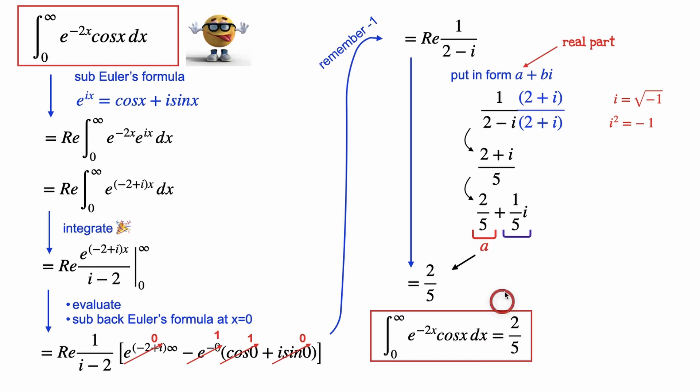What's really cool is this imaginary part, that's the answer if the integral had a sine x into it instead of a cosx, because the sine x is the imaginary part of Euler's formula. So it's kind of like a two-in-one right here.